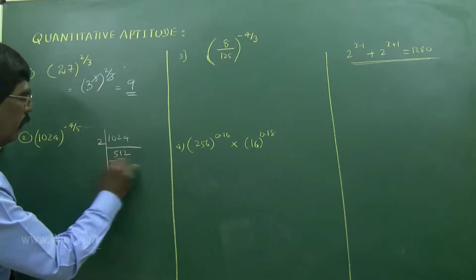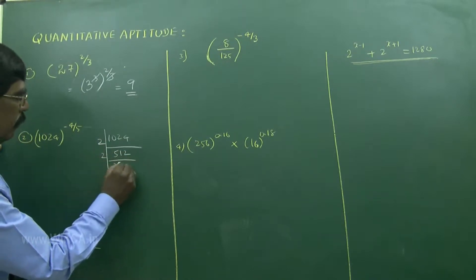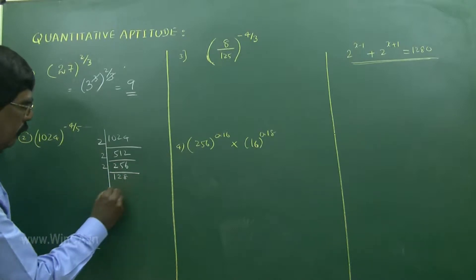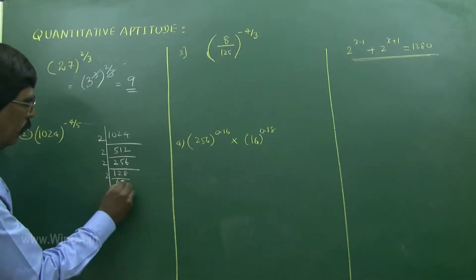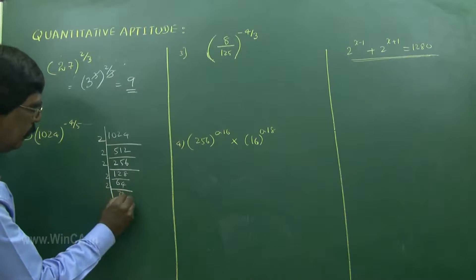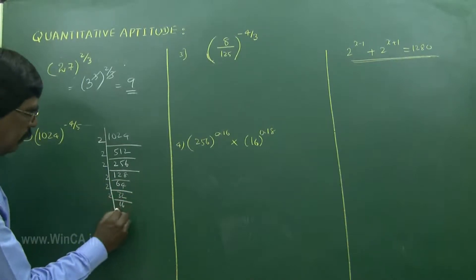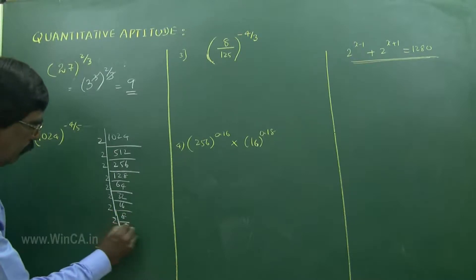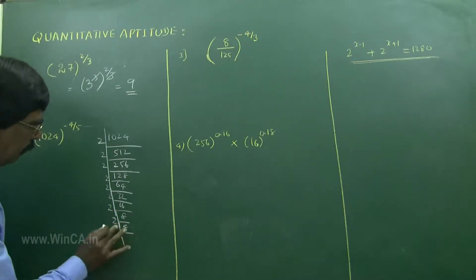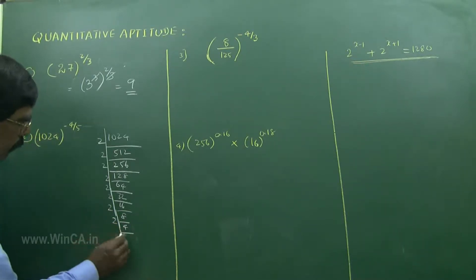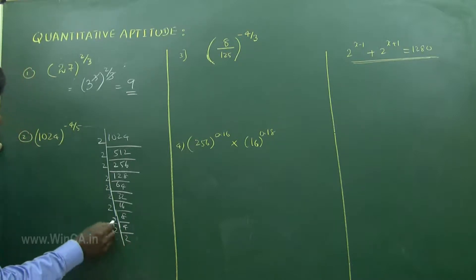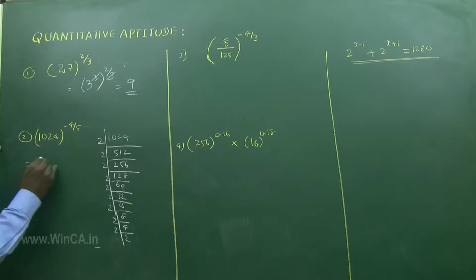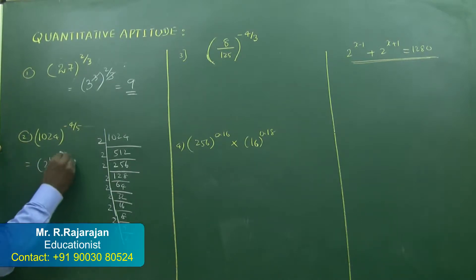Now take 1024. Divide by 2 repeatedly — 1, 2, 3, 4, 5, 6, 7, 8, 9, 10 times. So 1024 is 2 to the power of 10. This gives us 2 power 10 whole to the power of minus 4 by 5.